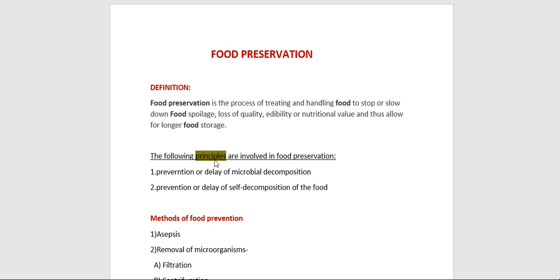There are mainly two principles involved in food preservation. The first is prevention or delay of microbial decomposition, and the second is prevention or delay of self decomposition of the food. Prevention or delay of microbial decomposition is mainly achieved by keeping out microorganisms — that is asepsis — by removal of microorganisms through filtration, or by preventing the growth and activity of microorganisms using low temperatures, drying, or chemicals.